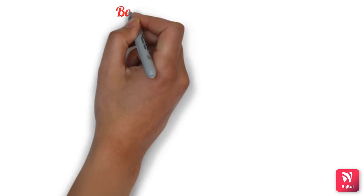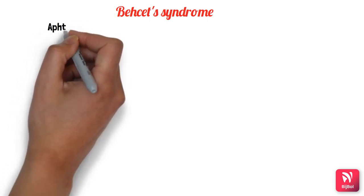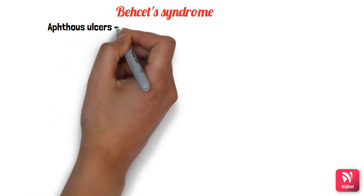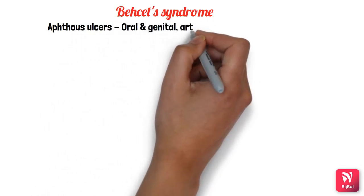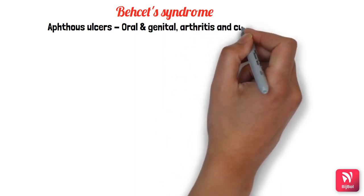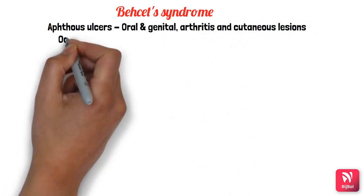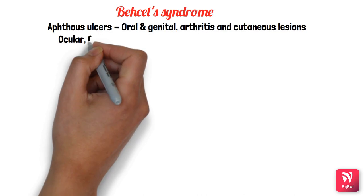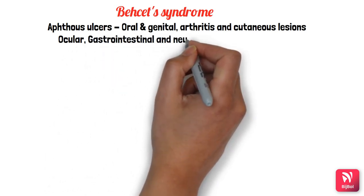Next is Behçet's syndrome, a multi-systemic disease. Its characteristic features are oral and genital aphthous ulcers along with arthritis and cutaneous lesions. Ocular, gastrointestinal, and neurological manifestations are also seen.